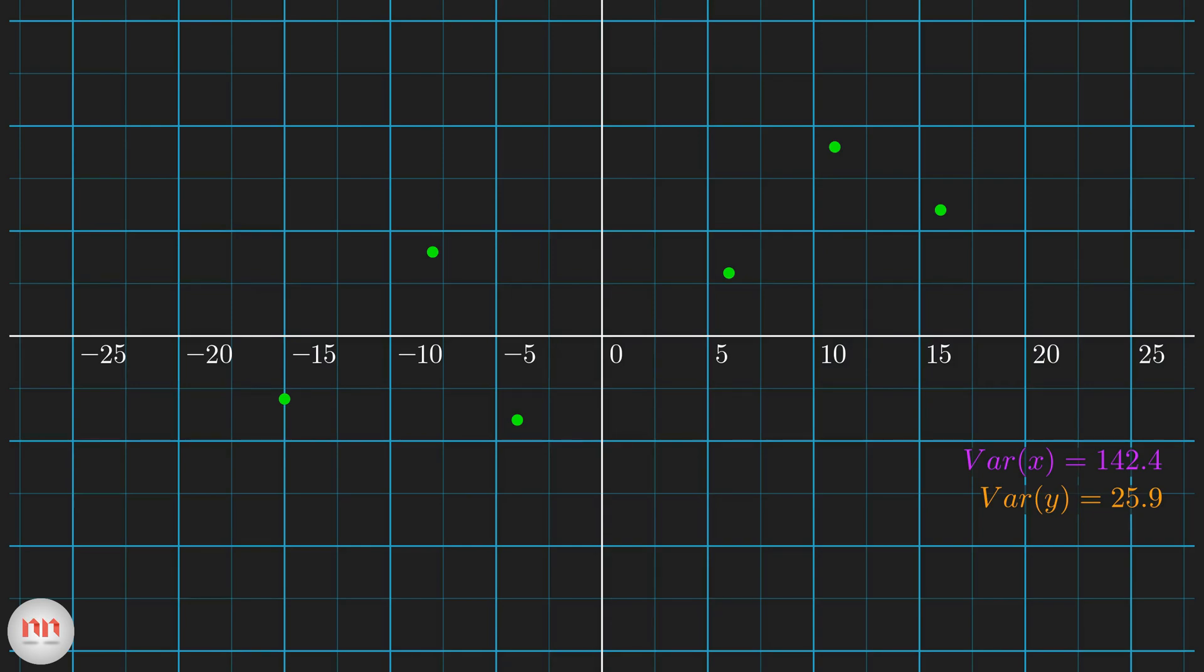Now, we have both x and y variance. But, these two alone don't say much about the distribution of the data in 2D. What I mean to say is, by looking at the plot, we can clearly see that there is a trend. As x increases, y also increases. But, we can't infer this trend or relation from the x and y variance values. For example, take this set of points. The x and y variance remains the same. But, the orientation or the trend is completely opposite.